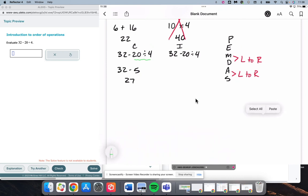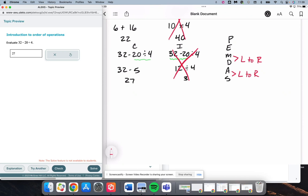If we were to do this incorrectly and just do it in the order that we see it from left to right, we would do 32 minus 20 would be 12, divided by 4 would be 3. That answer is going to be incorrect because we did not follow the order of operations. It's very important when you see something with multiple operations happening that we absolutely follow the order of operations and check to make sure that we're doing them in the correct order.